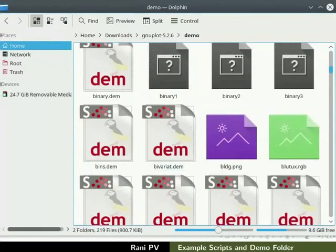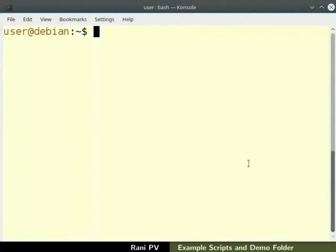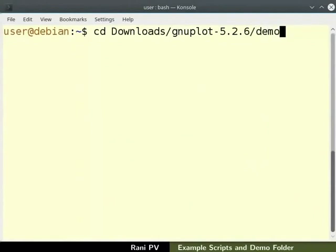We will now open a terminal by pressing Ctrl, Alt and T keys simultaneously. Type cd space downloads slash gnuplot-5.2.6 slash demo and press enter.